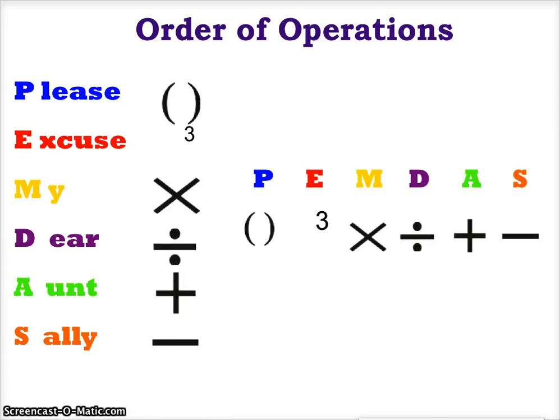P for parentheses, any grouping symbols like parentheses and brackets first. E is for exponentials, any exponent aspects of the expression. M and D are multiplication and division, and we always work from left to right. And then A and S are for addition and subtraction, and again we work those from left to right.